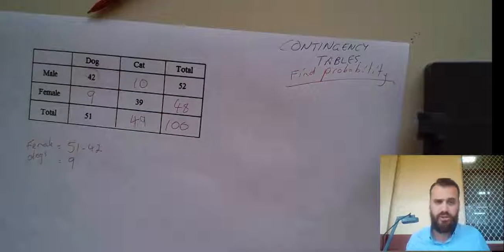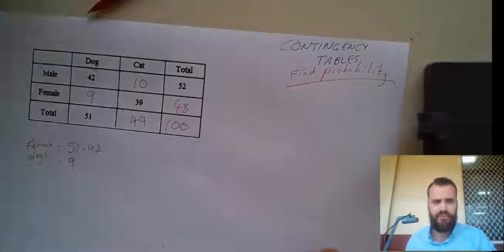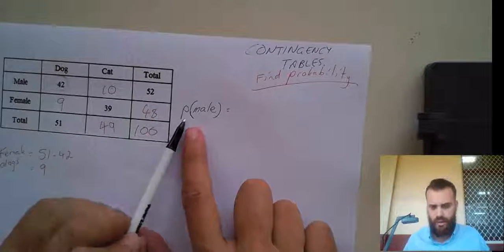Now, from this information, we can find a bunch of probabilities. So, let's do our first question. Okay, so the first question here is find the probability of a male.